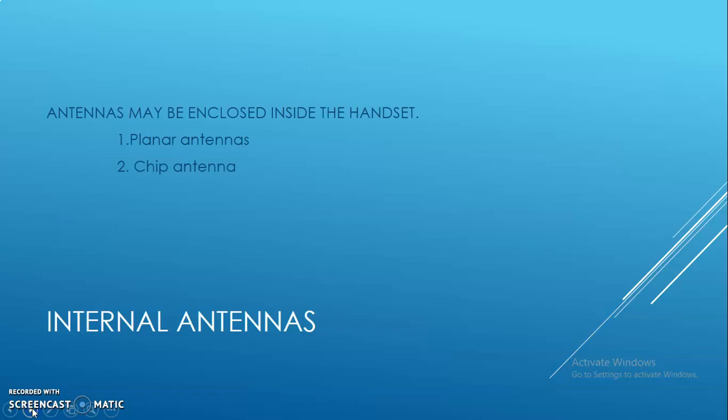The antenna may be enclosed inside a handset. There are mainly two types: planar antennas and chip antennas. A planar antenna is usually lambda by 4 microstrip mounted on a conducting case of handsets.